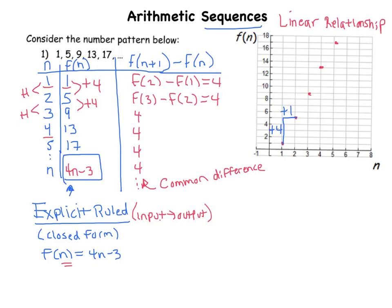So the other thing I want to get down before we end this video is that this column here, this third column, has what's called the recursive rule. So the recursive rule for this particular sequence would be f of n+1 minus f of n is equal to 4.